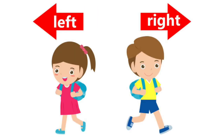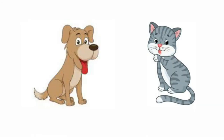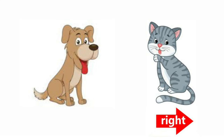Now children, look at this picture. The girl is on the left side and the boy is on the right side. Now look at this next picture — which animal is on the right side? Very good, the cat is on the right side and the dog is on the left side.